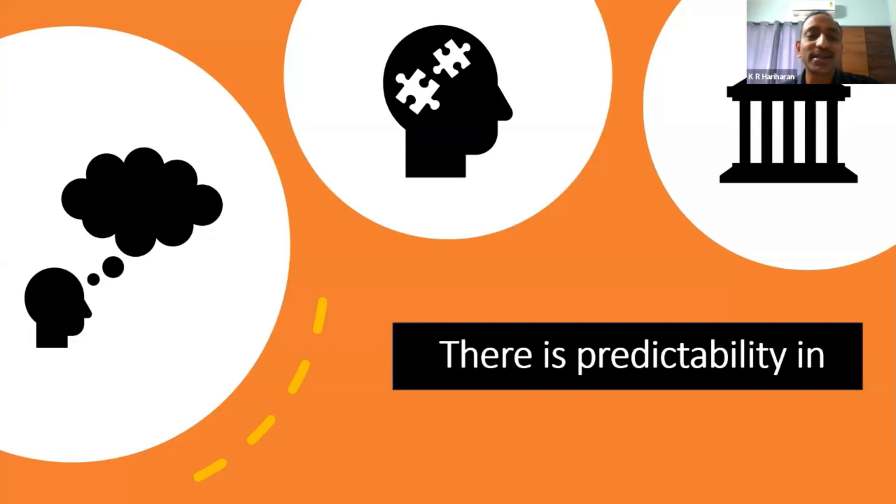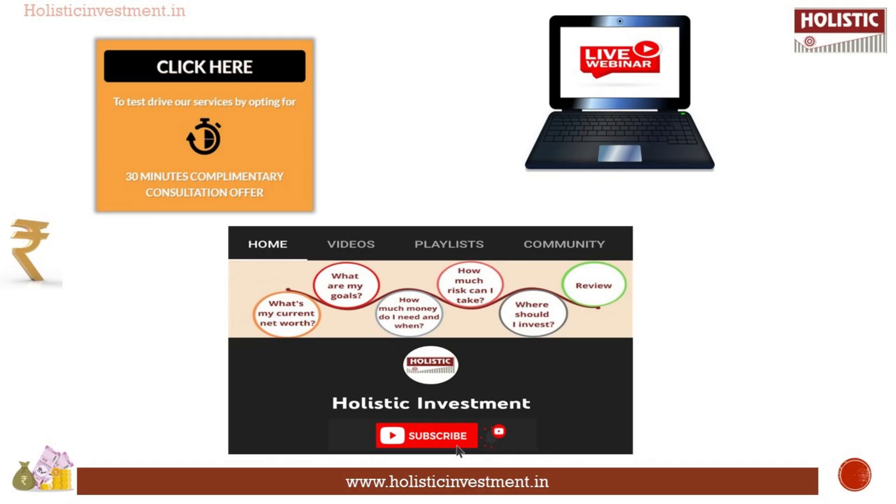The reason why people invest in FD is also because of predictability. There's a predictability of return. When you go and do a fixed deposit with a bank, the bank tells you I'm going to offer you seven percent or eight percent. So there is a predictability in terms of returns. You also know when that instrument is going to mature, so there's a predictability in when you're going to get the money back. Thanks for your detailed explanation.